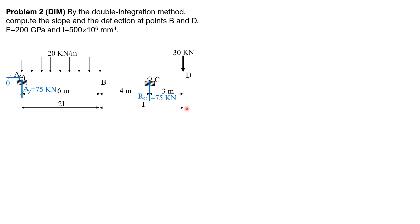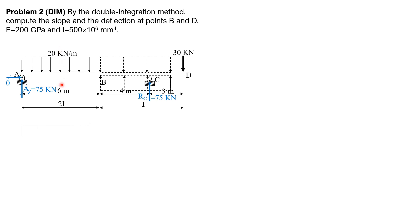Checking: 75 plus 75 equals 150, and 20 times 6 equals 120 plus 30 equals 150 — correct. For segment AB, the section distance from origin A is X. E times 2I times Y double prime AB equals 75X minus 10X squared. Dividing everything by 2: EI Y double prime AB equals 37.5X minus 5X squared.